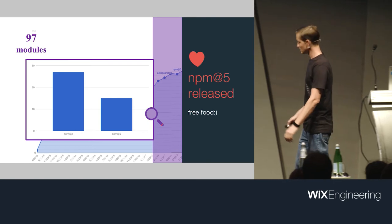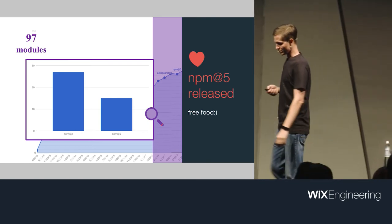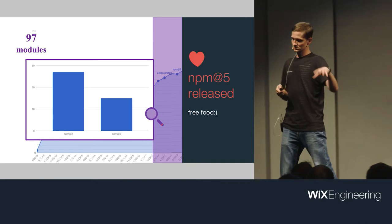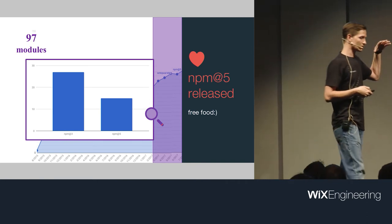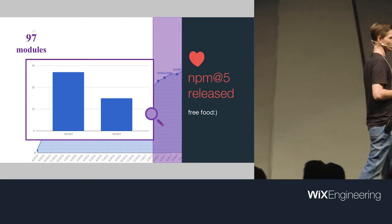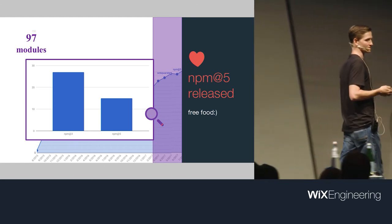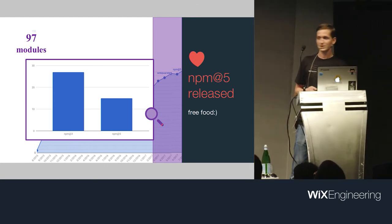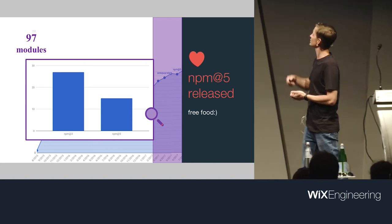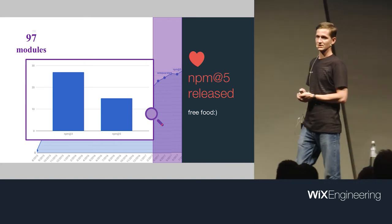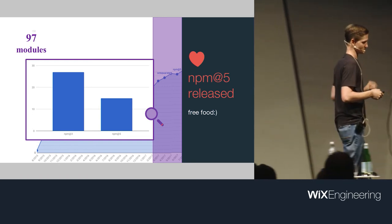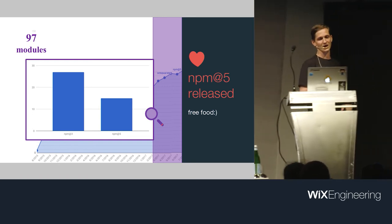Then at around 97 modules, things were slowing down again — but then NPM 5 was released. It was really amazing — free food. The speed went from 27 to around 17 minutes without me doing anything. I love those moments when you don't do anything and things just get better.